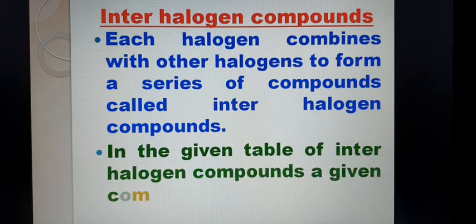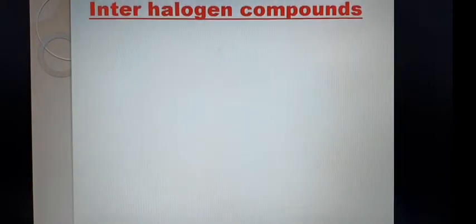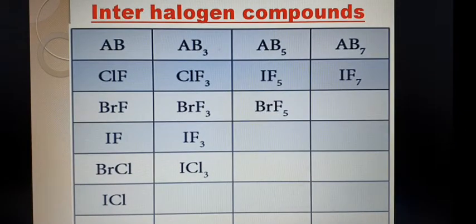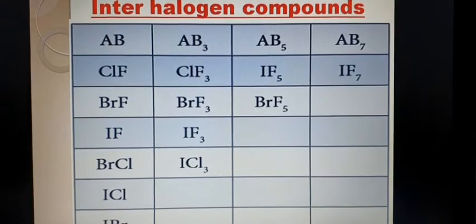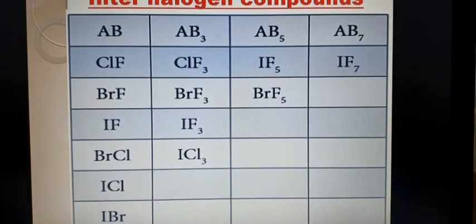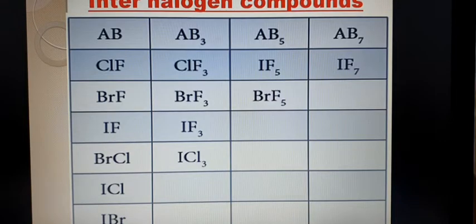In the given table of interhalogen compounds, a given compound A is less electronegative than B. These are examples of interhalogen compounds.